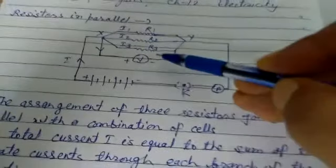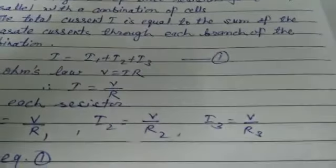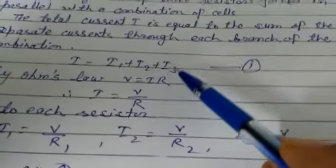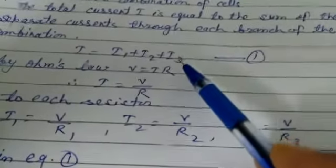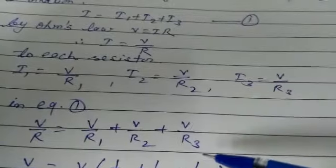So I can write as V upon R, I1 as V upon R1, I2 as V upon R2, I3 as V upon R3. You will understand that I is changing but V is equal. Now equation 1 is I equal to I1 plus I2 plus I3. Putting the value of I, I1, I2, I3 in equation first, we get V upon R equal to V upon R1 plus V upon R2 plus V upon R3.